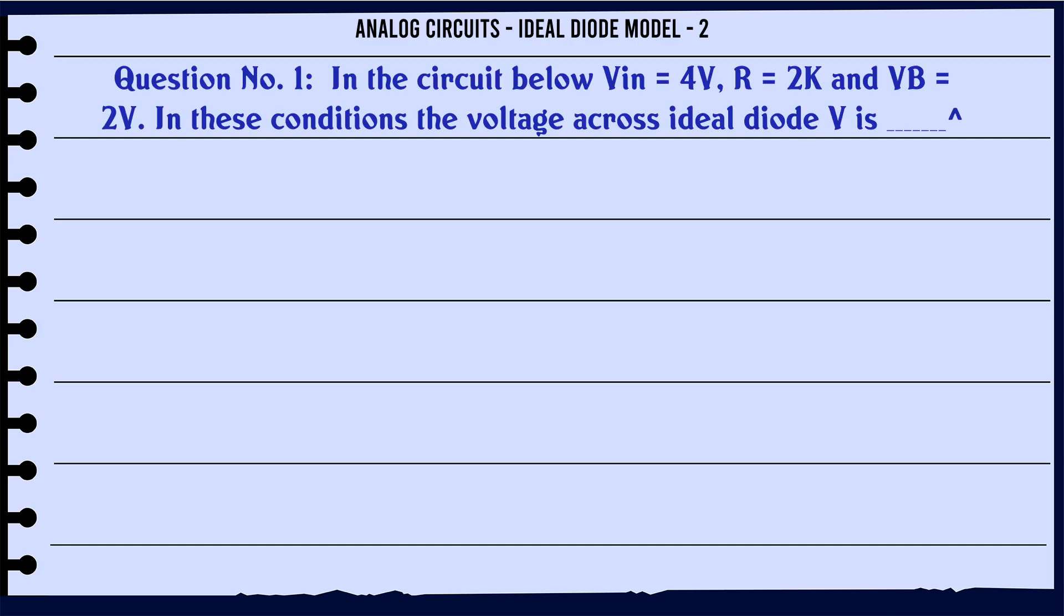In the circuit below, Vin = 4V, R = 2K, and VB = 2V. In these conditions, the voltage across ideal diode V is: A) -4V, B) -2V, C) 2V, D) 0V. The correct answer is 0V.